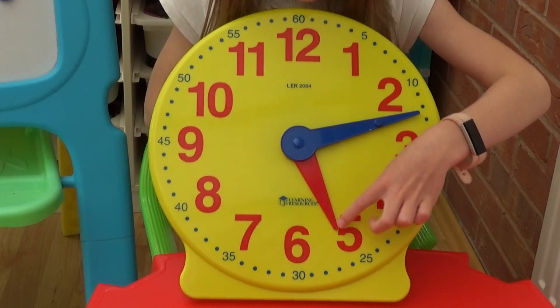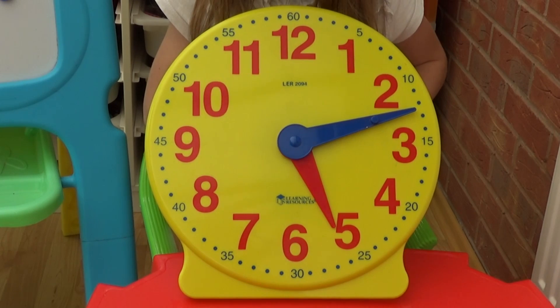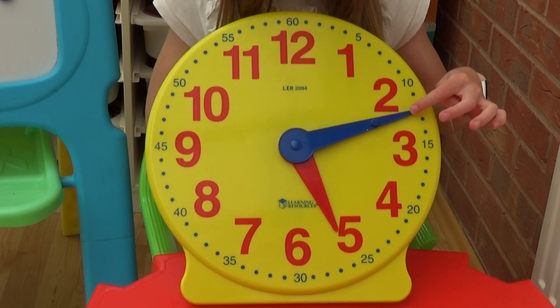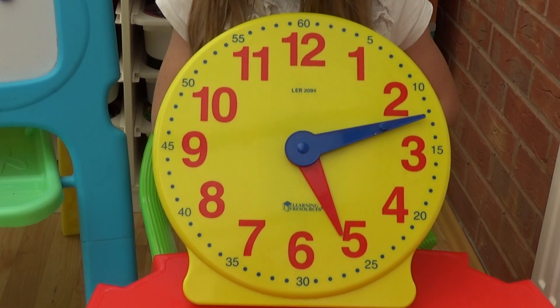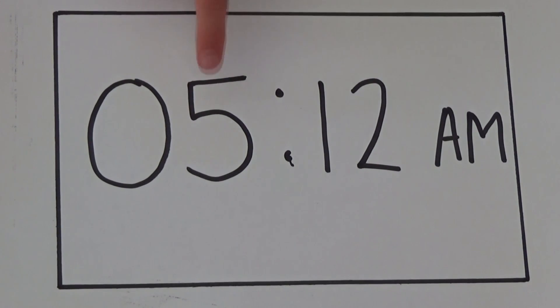For our first one the hour hand is pointing at just after the 5 and the minute hand is pointing at the 12 minutes past. So the time must be 12 minutes past 5. Remember we need to write the hours in first and then the minutes.